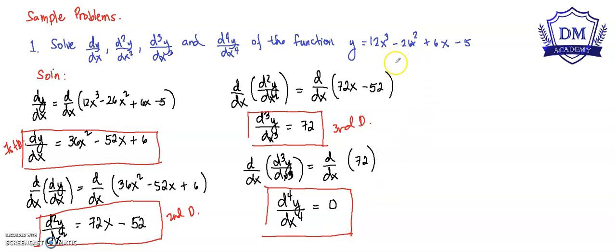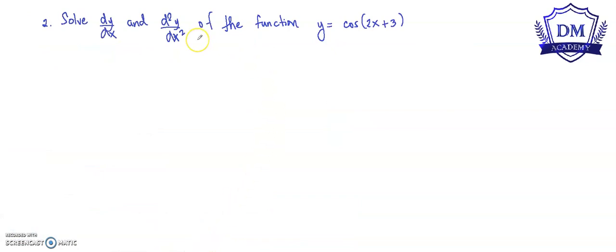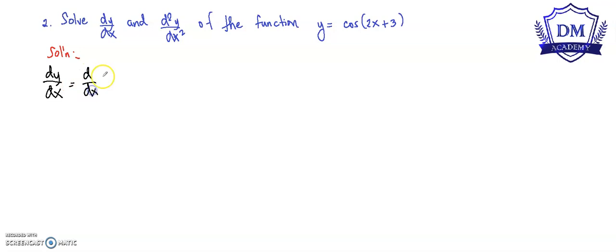Take note that the function y is equal to 12x cubed minus 26x squared plus 6x minus 5 is a polynomial function. If the given function is a polynomial function, you can expect that the last derivative will always be equal to zero. Now let's have another problem: solve the first differentiation and the second differentiation of the function y is equal to cosine of 2x plus 3.